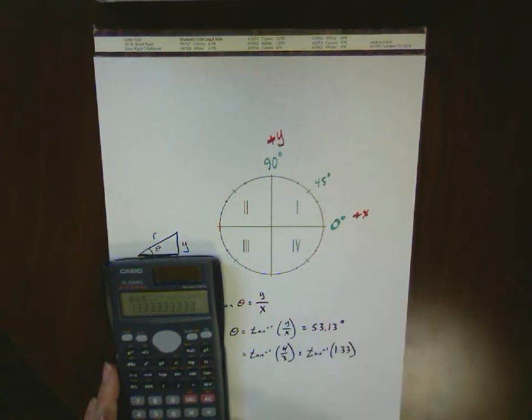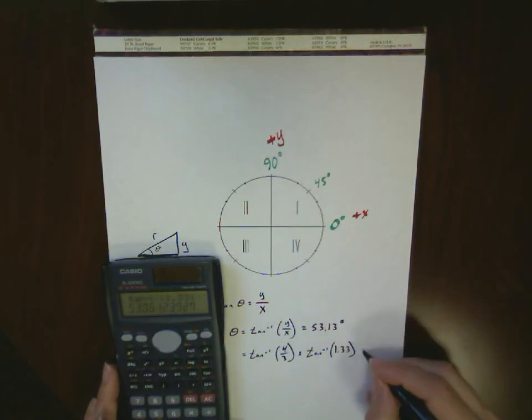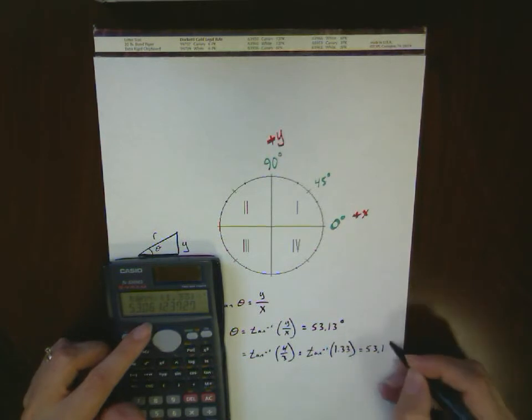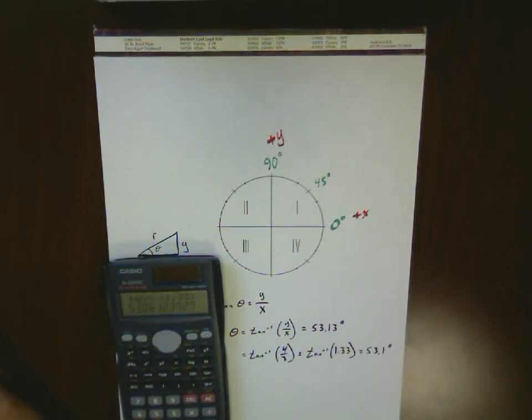And put that number in. So we have the inverse tangent of 1.33. And again, that gives me the same value. Notice, though, because of my rounding, it comes off just a little bit different, but it's still round to 53.1 degrees.